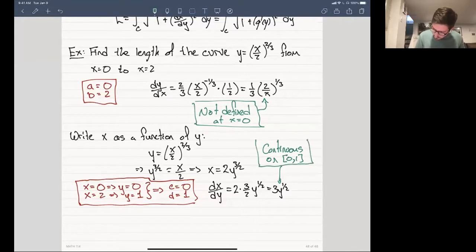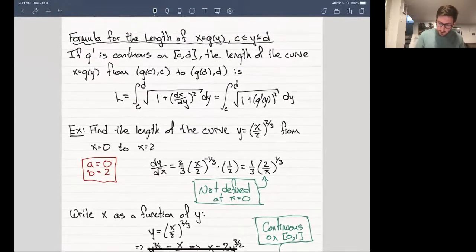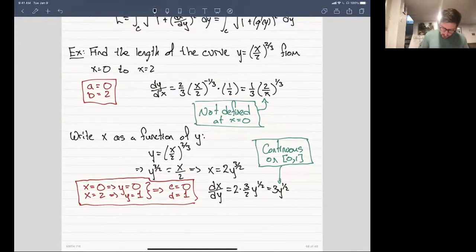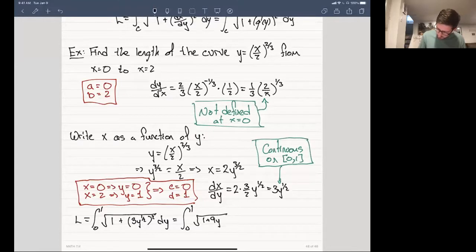So that tells us that we can actually apply this definition or this formula at the top here that gives us the arc length of this curve. So let's actually put in everything we know. We get the length is equal to the integral from c to d, 0 to 1, of the square root of 1 plus the derivative of x with respect to y squared, [3y^(1/2)]² dy, which we can simplify that slightly. We get √(1 + 9y) dy.